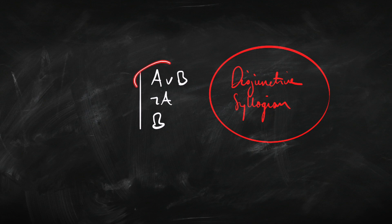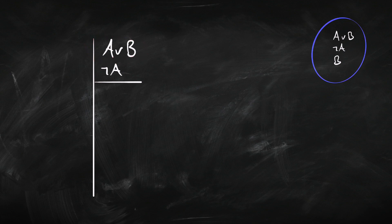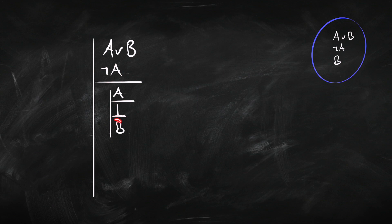Here's another example: disjunctive syllogism. This is the one that goes from a disjunction and one of the disjuncts being false to concluding it must be the other disjunct that's true — A or B, not A, therefore B. It's worth noting that in classical logic this is actually equivalent to modus ponens. We're going to start off with the two premises and reason by cases using or-elimination. We assume A, which allows us to infer the falsum because we've got a contradiction. And from the falsum we can infer anything we like — let's infer B.